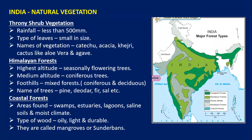Then we have Himalayan forests, which depend on the altitude of the mountain. At the highest altitude, we find seasonally flowering trees. At mid-altitude, we find coniferous — that is cone-shaped — trees. At the foothills, we have mixed forest, a mixture of coniferous and deciduous trees. Examples are pine, deodar, fir, and sal.